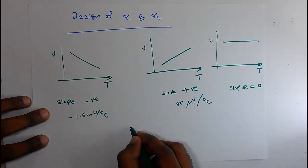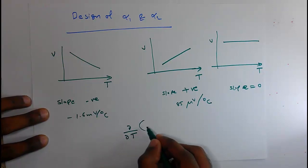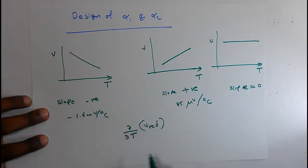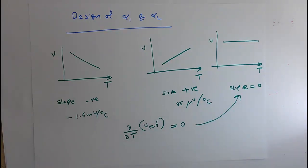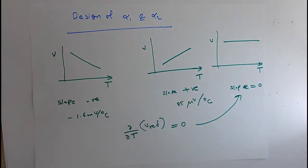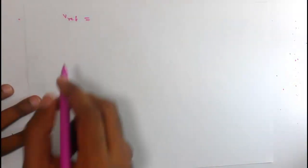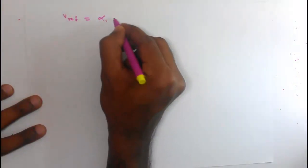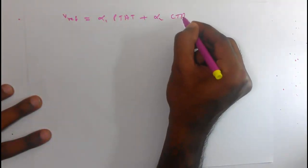If we differentiate our reference voltage with respect to temperature, dV_reference/dT should equal zero. This is shown by the graph — slope zero means it is a straight line, not changing with respect to temperature. In the beginning we said we will make V_reference equal to alpha 1 times PTAT plus alpha 2 times CTAT.